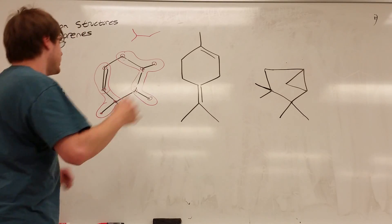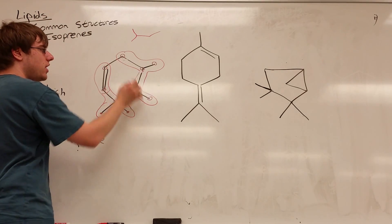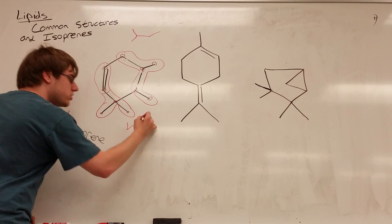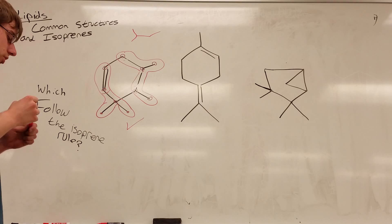So this structure does in fact follow the isoprene rule. So one, two, three, four, five—bunny ears and a tail. One, two, three, four, five—bunny ears and a tail. So this one checks out, it follows the isoprene rule.